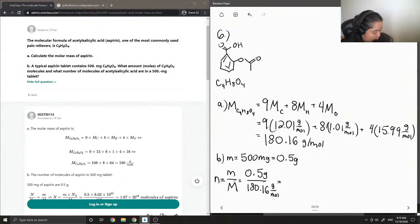Okay, so this gives us number of moles, which is 2.78 times 10 to the negative 3 moles. Okay, so that's our first answer for part B. I'll just put it in a box.